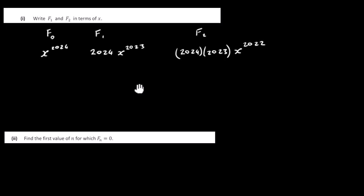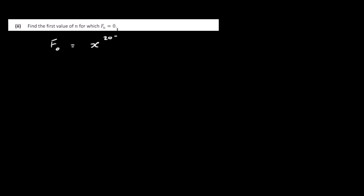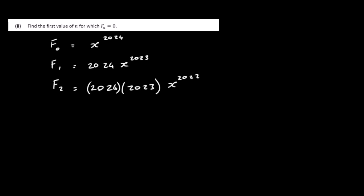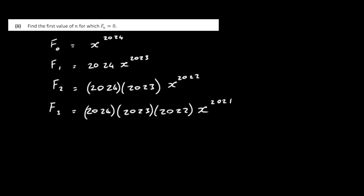Find the first value of n for which Fn equals 0. Let's write out a few terms to find a pattern. F0 is x to the power of 2024. F1 is 2024 x to the power of 2023. F2 is 2024 times 2023 times x to the power of 2022. F3 is 2024 times 2023 times 2022 times x to the power of 2021. So we have our first four terms.